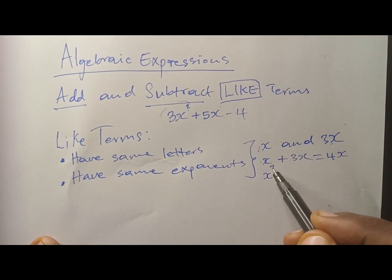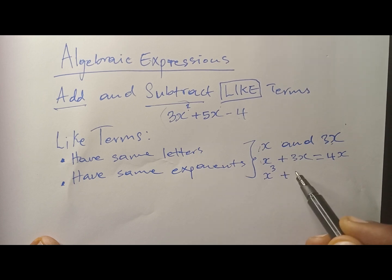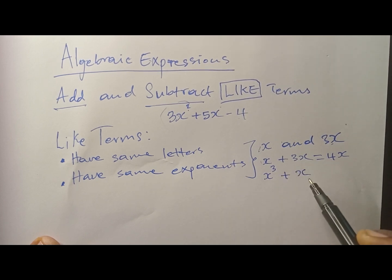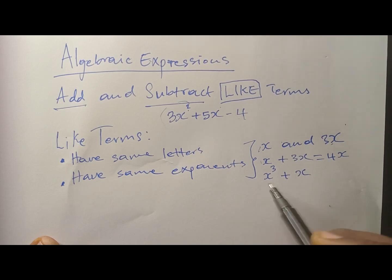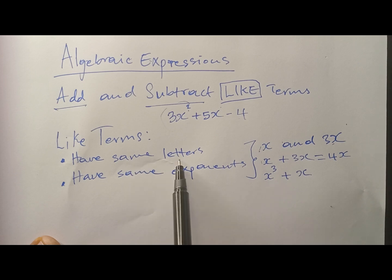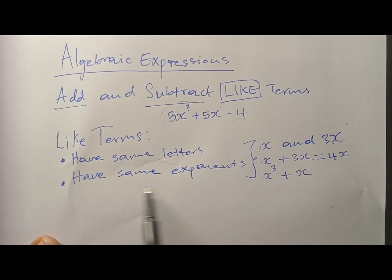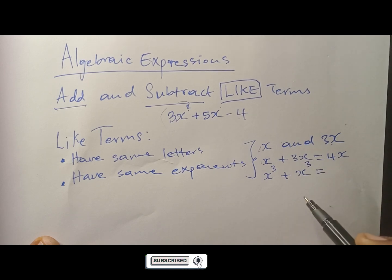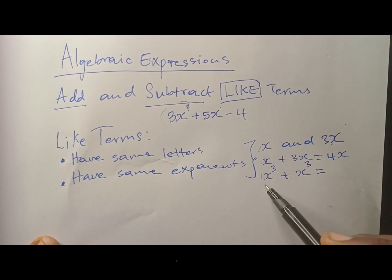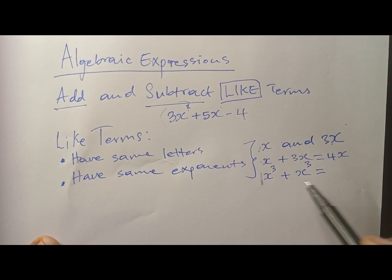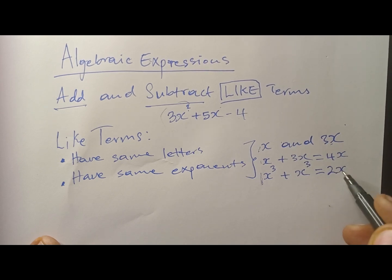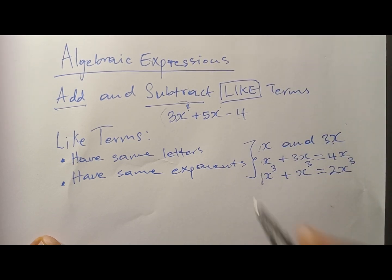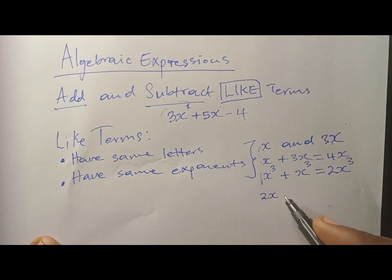Another example: x cubed plus x — you cannot add these two because they are not like terms. Yes, they have the same letter, but they do not have the same exponents. However, x cubed plus x cubed — now you can add them. There's an invisible 1 in front of each, so 1 plus 1 equals 2x cubed.